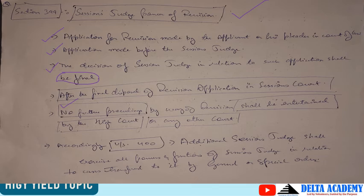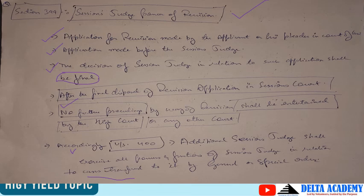Under Section 400, the Additional Sessions Judge shall exercise all powers and functions of a Sessions Judge in relation to cases transferred to it by general or special order. Yani ki jo Additional Sessions Judge hota hai, voh saare cases deal karega jo uske paas transfer hokar aate hain, Sessions Judge ke powers and functions attain karta hua. Jo bhi cases usse delegate kiye jaayenge, unka redressal poori tarah se as per the law karega. Yeh powers general ya special order ke through diye ja sakte hain.